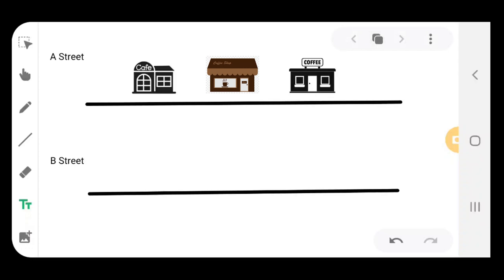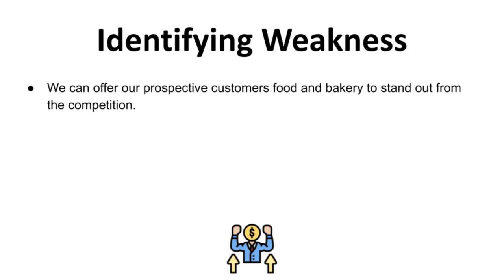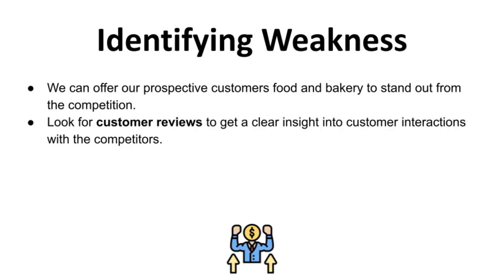One of the first things we need to do is to identify their weakness. We need to find out where they fall short and how we can rectify this through our business. Let's say, for example, that both of these coffee shops only sell coffee and they don't have sufficient food and bakeries for sale. We can capitalize on being a coffee shop that also supplies food and bakeries. Another thing we can do is look at the reviews that both of these coffee shops have on Google and see what customers' complaints are. From there, we will be able to find more weaknesses and turn their weaknesses into our strengths.